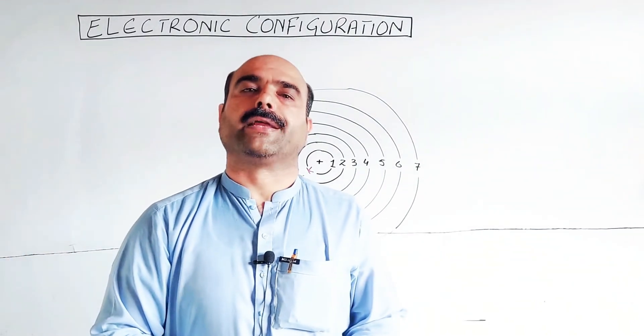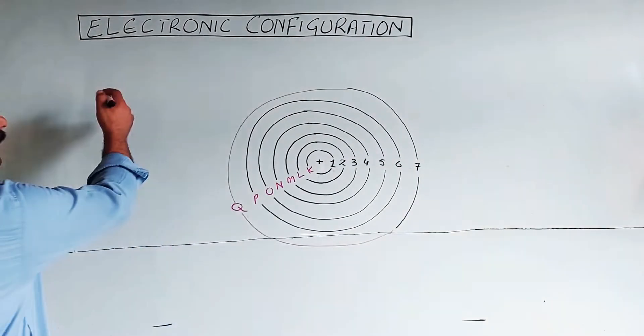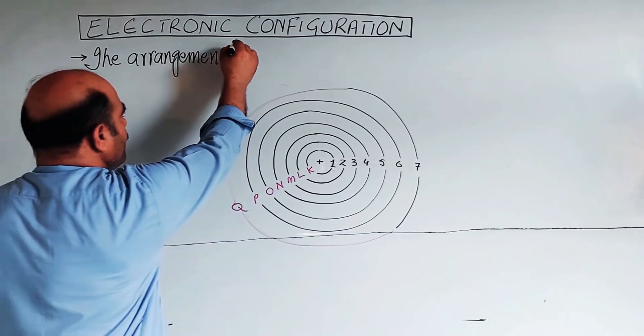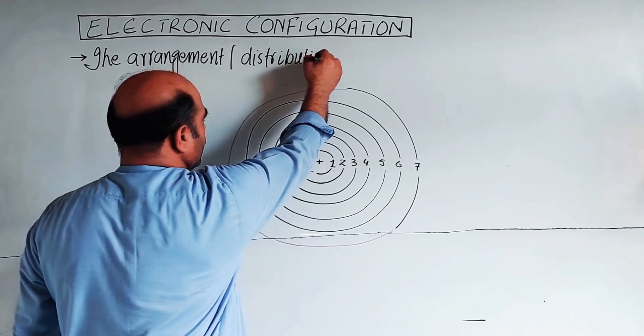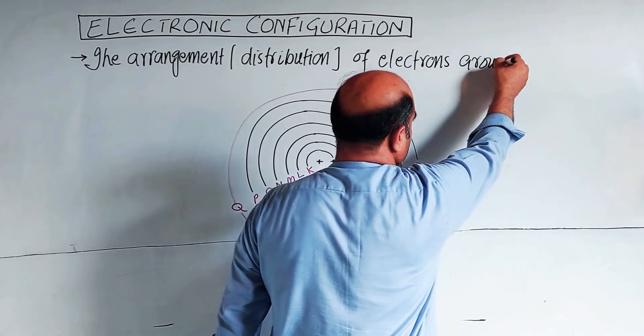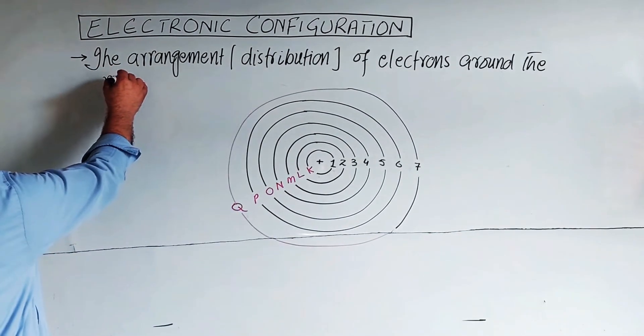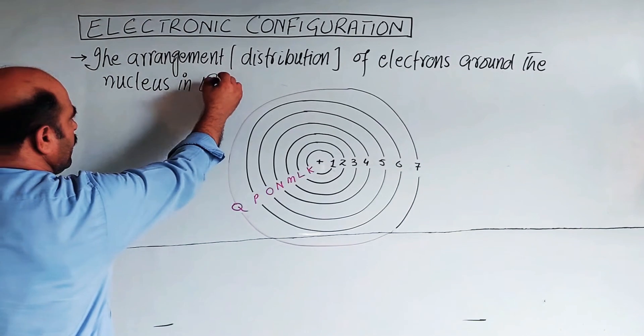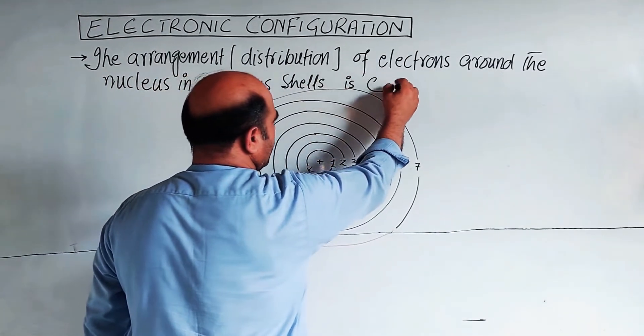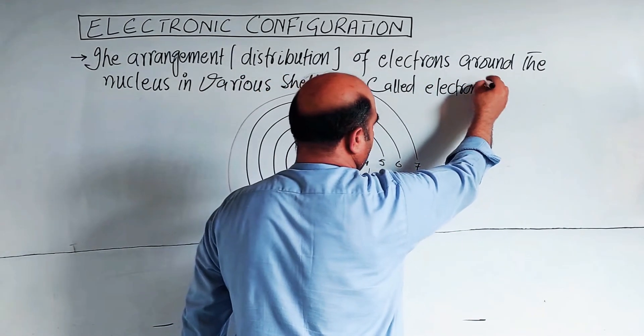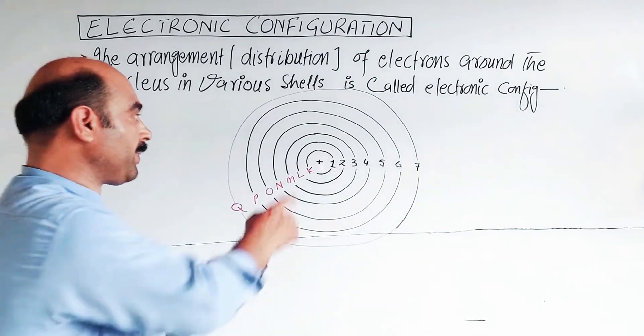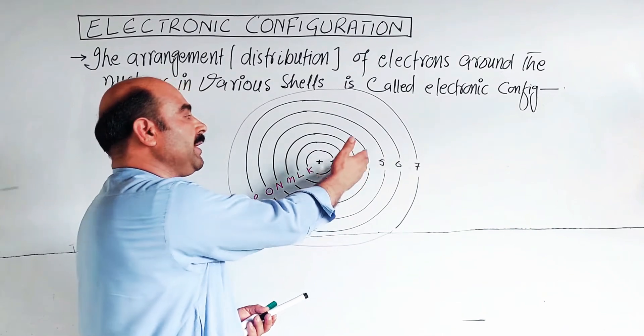The arrangement of electrons around the nucleus in these orbits or shields or energy levels is called electronic configuration. The definition is: the arrangement or distribution of electrons around the nucleus in various shells is called electronic configuration.